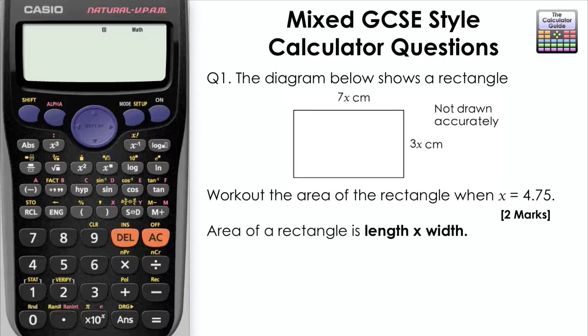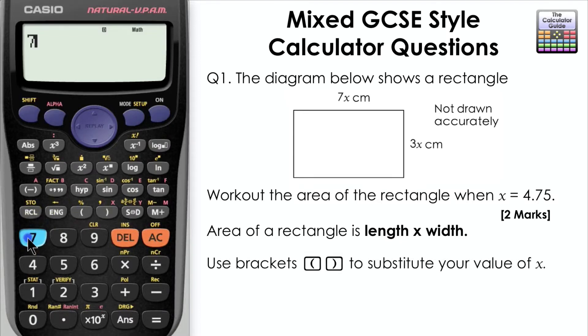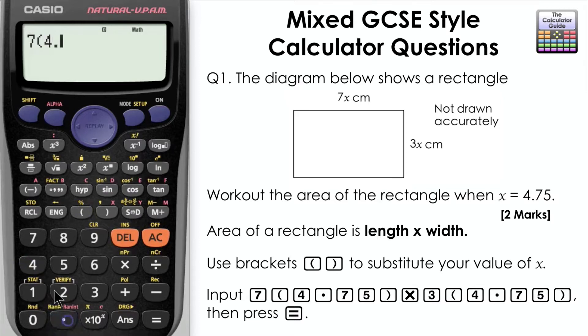The area of the rectangle is length multiplied by width. We're going to use brackets to substitute where we have a value of X. Input the following into your calculator.